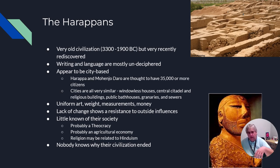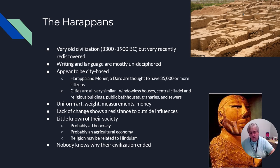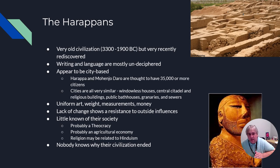Ultimately, we don't know what happened to the Harappans. There are some suggestions: one is a change in climate, possibly desertification or soil erosion; another is that some sort of calamity like an earthquake may have changed the course of the river, or deforestation. There's also a suggestion that they were invaded and just couldn't fight off the invaders. Whatever it is, we actually don't know.